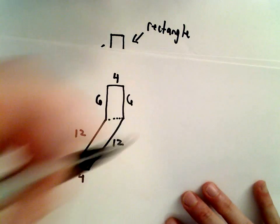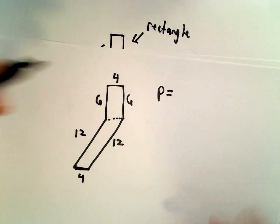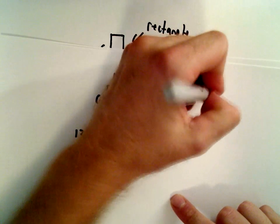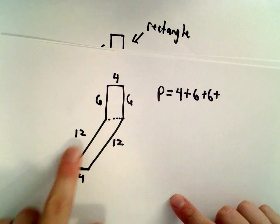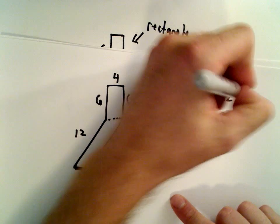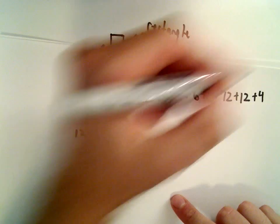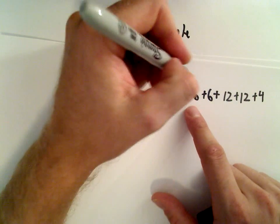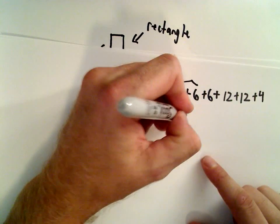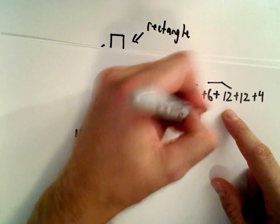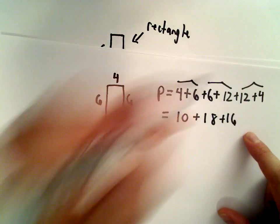So to find the perimeter, it's just a matter of adding all those values up. So we've got 4 plus 6 plus 6. We've got 12 plus 12, and then the value of 4 at the bottom. So let's see, 4 plus 6, that's going to give us 10. 6 plus 12, that's going to give us 18. 12 plus 4, that's going to give us 16.